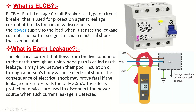What is Earth Leakage? The electrical current that flows from the live conductor to the Earth through an unintended path is called Earth Leakage. It may flow through poor insulation or through a person's body and cause electrical shock. The consequence of electrical shock may prove fatal if the leakage current exceeds only 30 mA. Therefore, protection devices are used to disconnect the power source when such current leakage is detected.